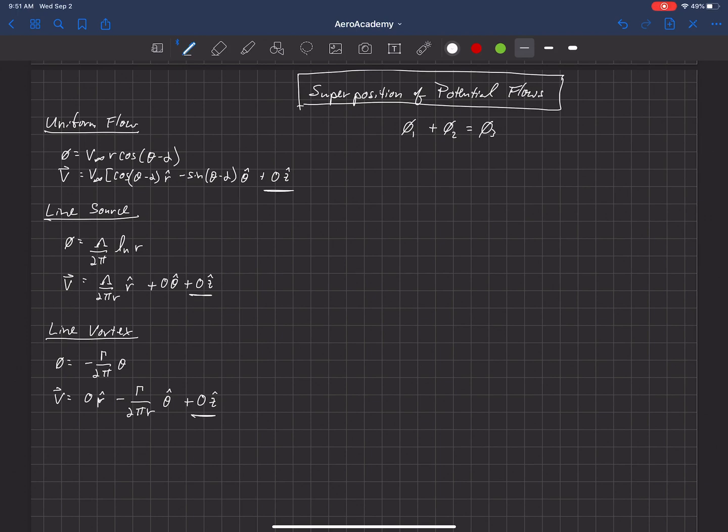So I've included the z components here, but you see that for all three of these, the uniform flow, the line source, and the line vortex, the z component is zero.